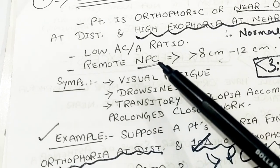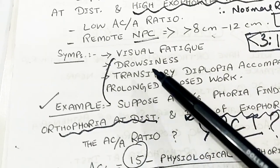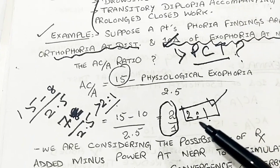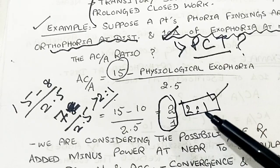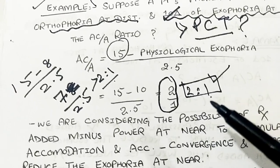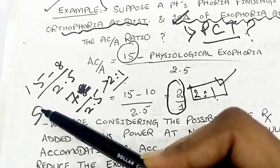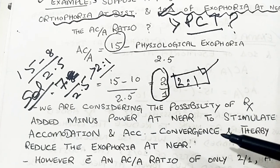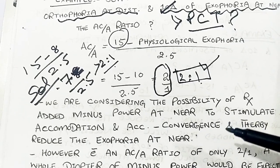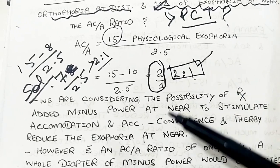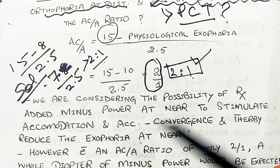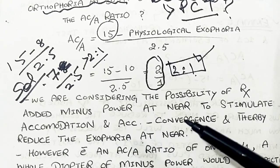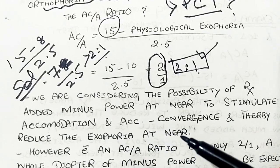With a remote near point of convergence and symptoms of visual fatigue, drowsiness, and transitory diplopia accompanying prolonged close work, the patient is diagnosed with convergence insufficiency. The solution is to add minus lenses in the patient's spectacles, because minus lenses induce accommodation at near, stimulate accommodation, and the accompanying accommodative convergence is induced, thereby reducing the exophoria at near.